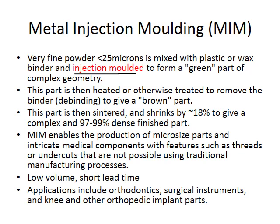Metal injection molding enables production of micro-sized parts and intricate medical components, including features like threads and undercuts that are not possible with traditional manufacturing processes. It's ideal for situations with low product volumes but short lead times. It's less wasteful than investment casting but difficult to scale to high volumes. Applications include orthodontics, surgical instruments, and knee and other orthopedic implant parts.